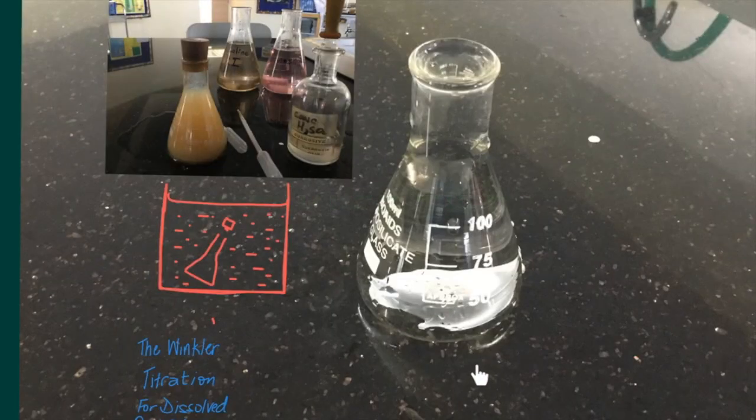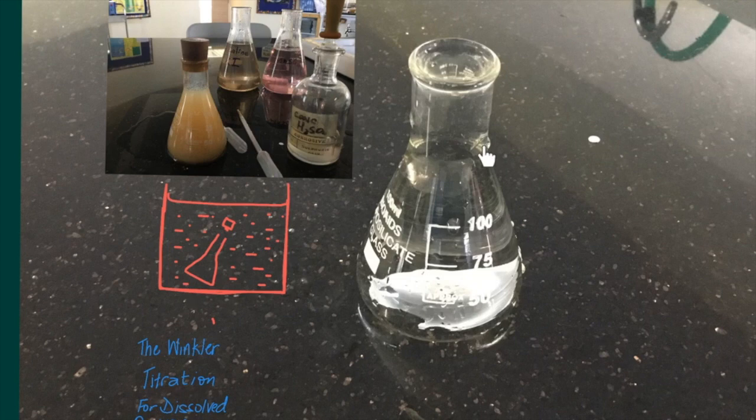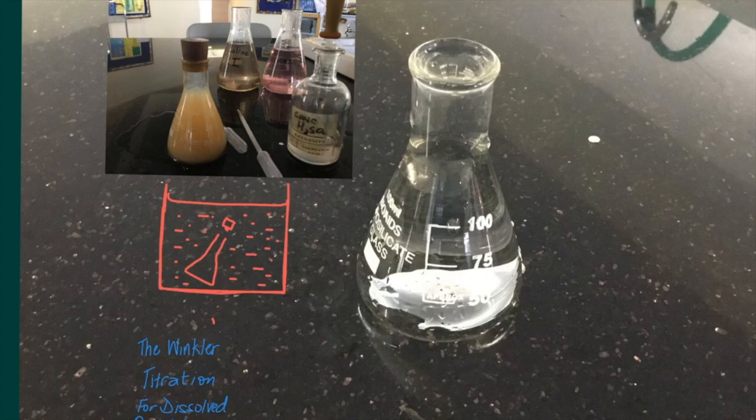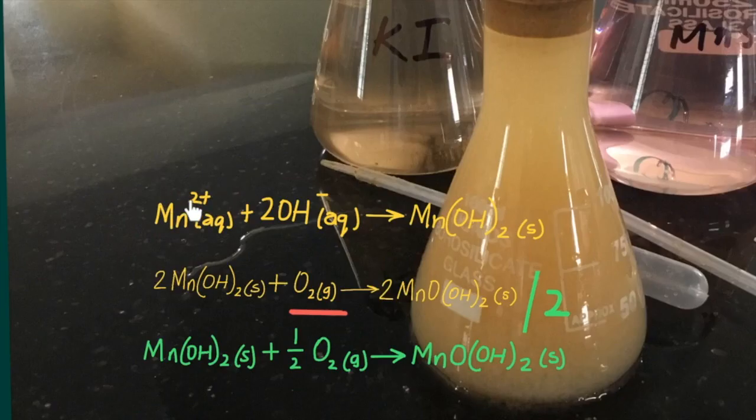Now we prepare the sample for the Winkler titration by the addition of alkaline potassium iodide and manganese sulfate. Once we perform this addition immediately upon collecting the sample, then we need not worry about oxygen dissolving from the outside because manganese ions react with hydroxide ions to first produce this part of the precipitate which then reacts with